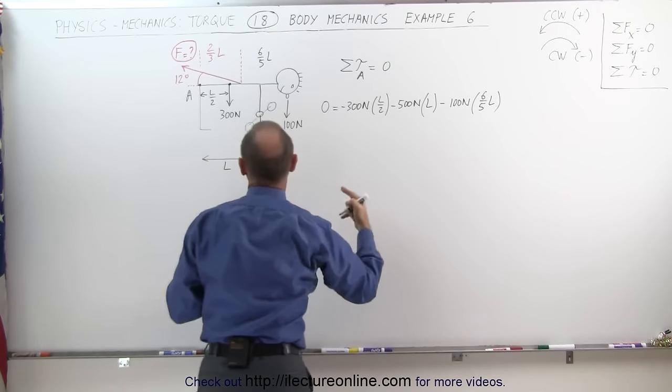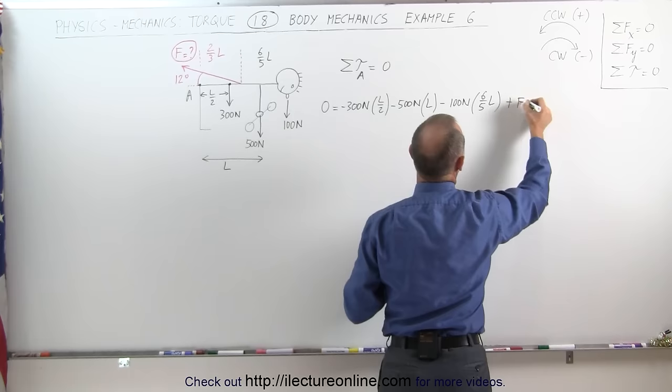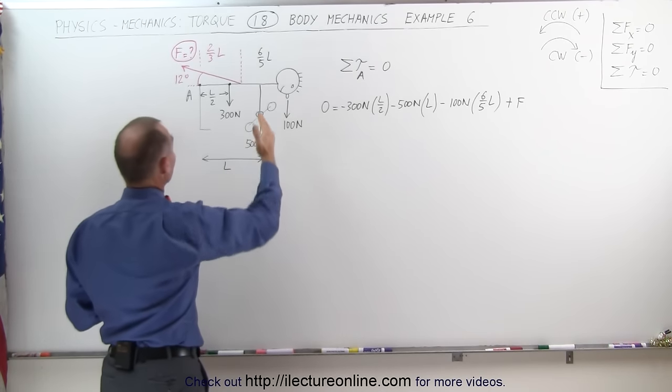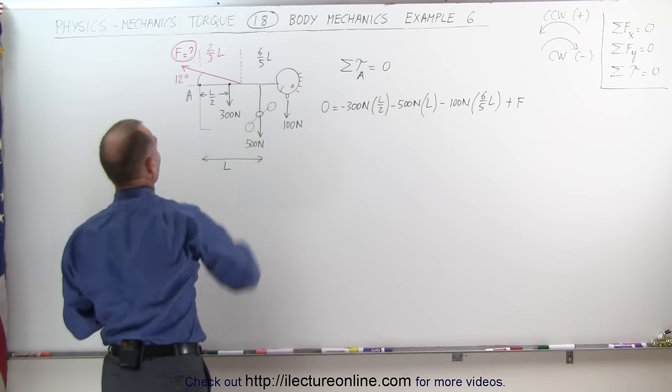But now we have the muscle here pulling in the opposite direction, that's a positive torque, plus the force times the perpendicular distance from the line of action of force to the pivot point. That's this right here.